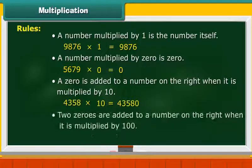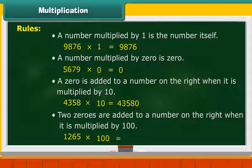2 zeros are added to a number on the right when it is multiplied by 100. 1265 multiplied by 100 is equal to 126500.